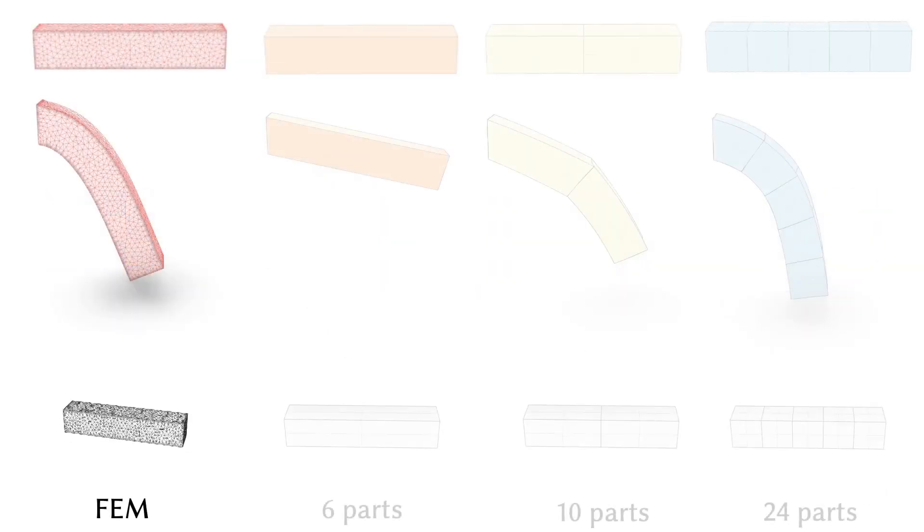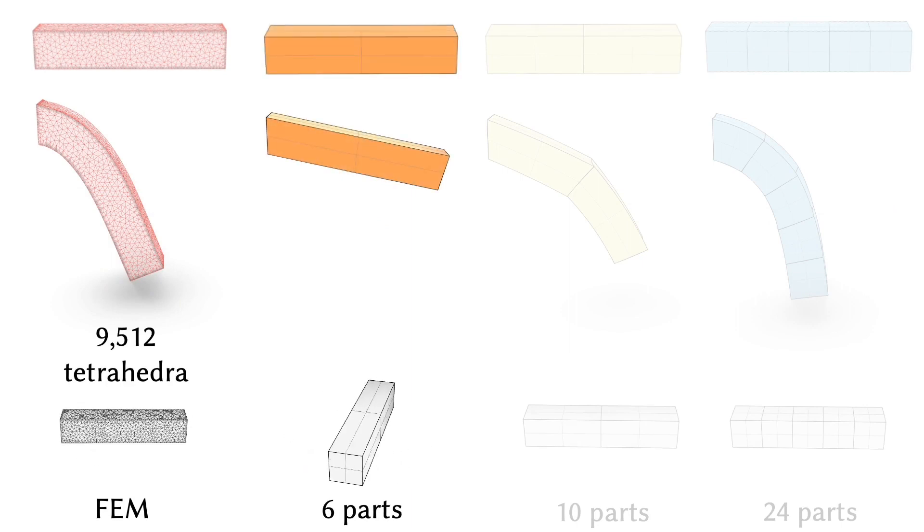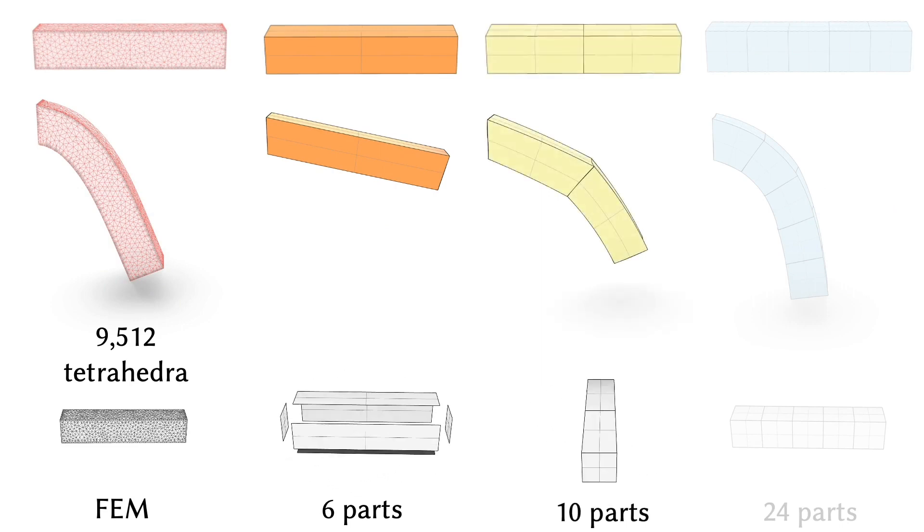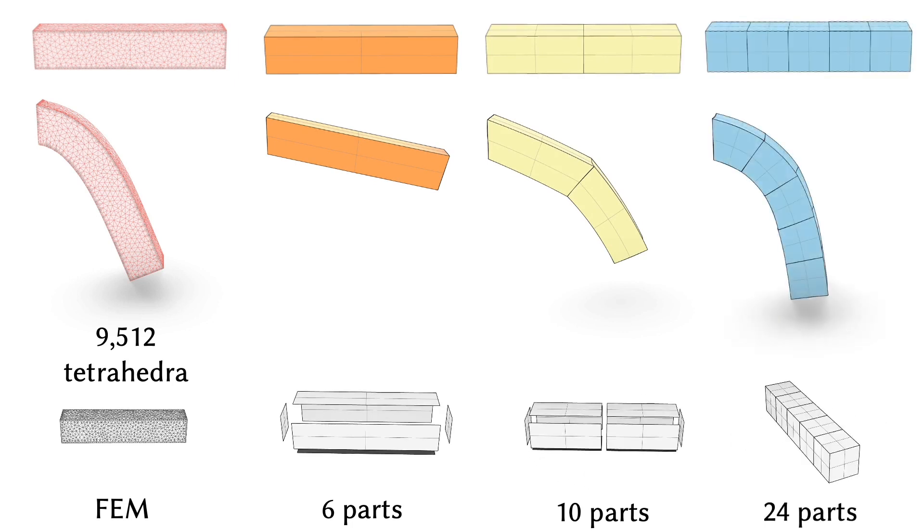Here we show the results of simulating a Neo-Hookian cantilevered beam using the finite element method. The FEM mesh contains over 9,000 tetrahedra. We then simulate the same geometry with identical material properties using our approach. As we increase the number of parts from 6 to 10 to 24, our method qualitatively approaches the FEM solution.